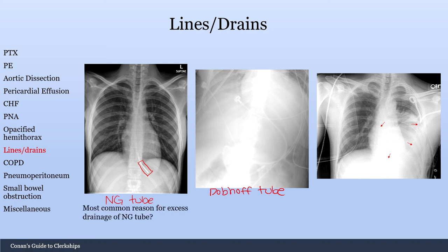What is the most common reason for excess drainage of an NG tube? This is a common pimp question, especially on surgery — the answer is placement into the duodenum. If the NG tube goes too far into the duodenum, it will suction out pancreatic secretions and other secretions there. If a patient is draining three liters a day from their NG tube, you may have placed it too far and should get an X-ray to check.